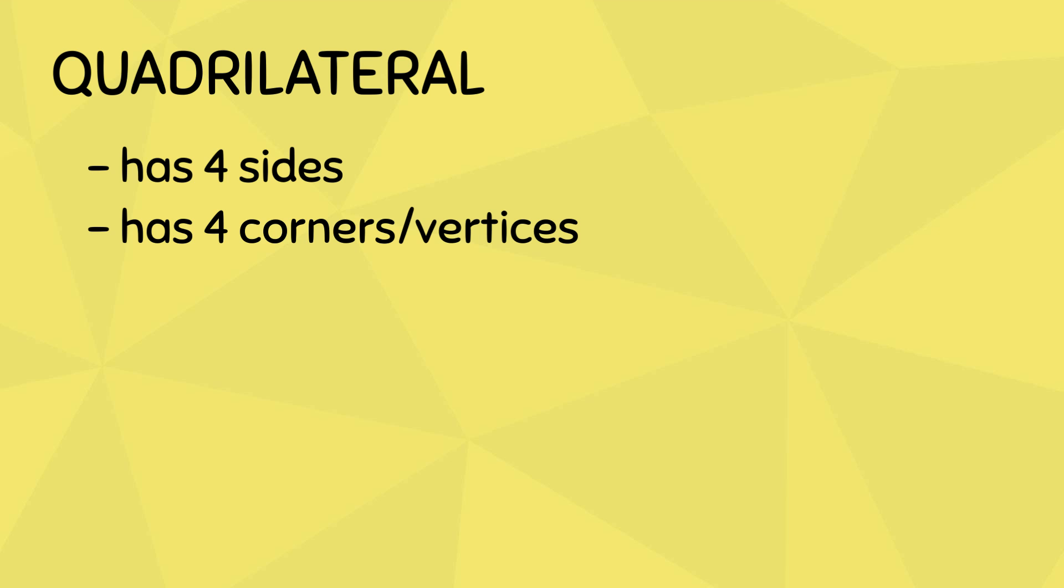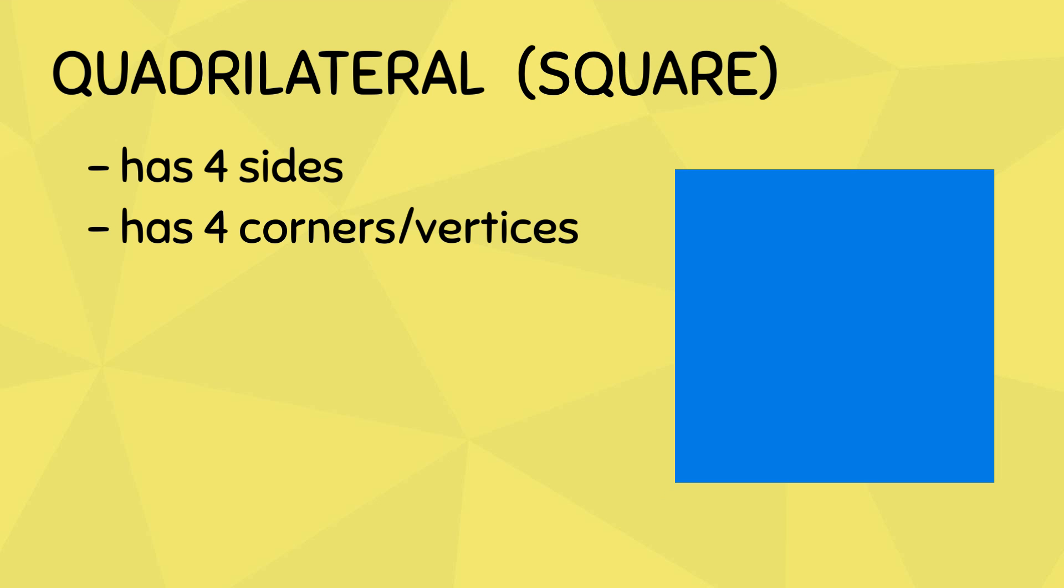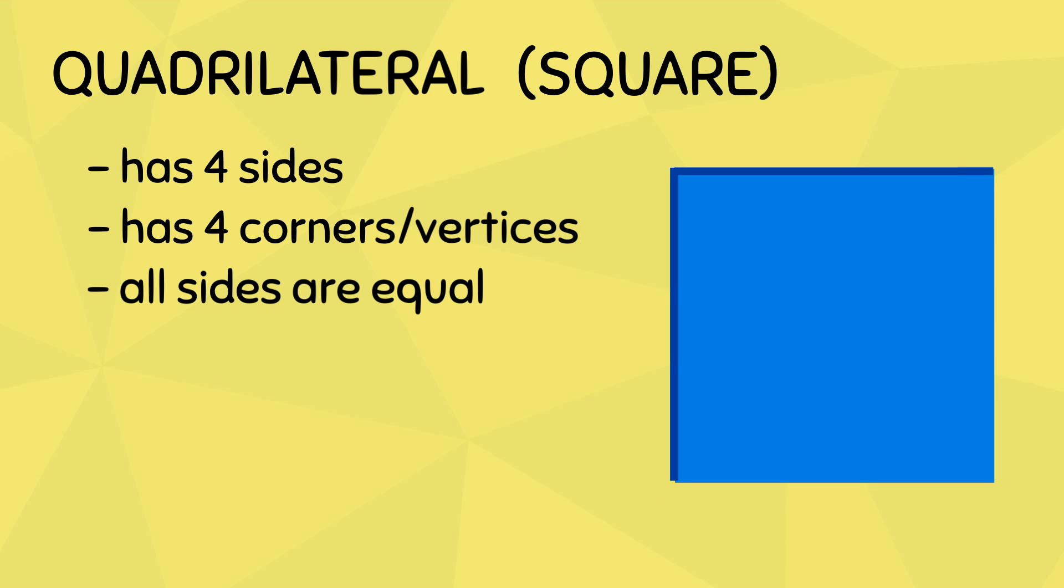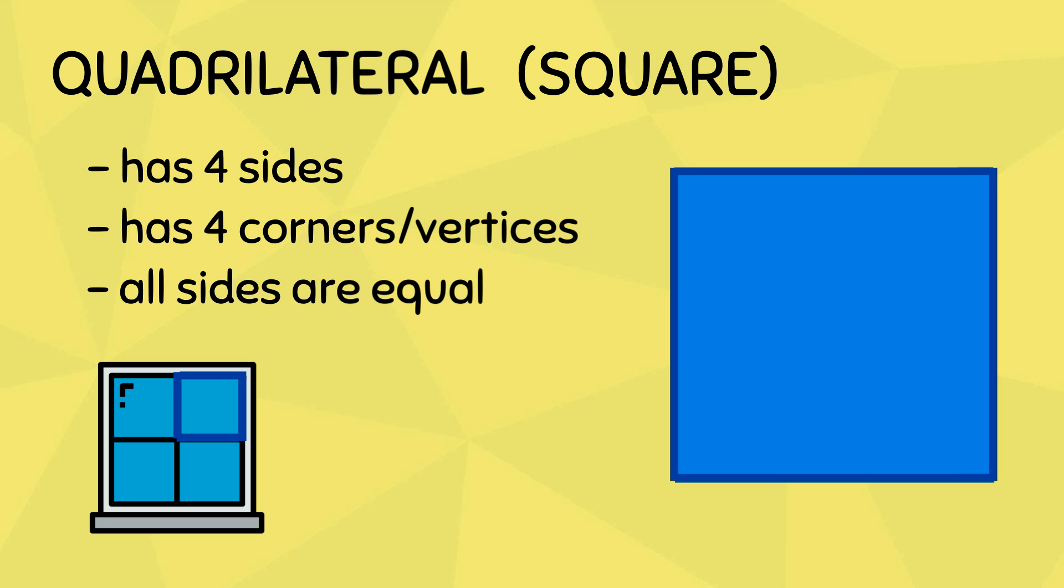This first quadrilateral is called a square. All of its four sides are equal. You might recognize squares in windows or pieces of chocolate bars.